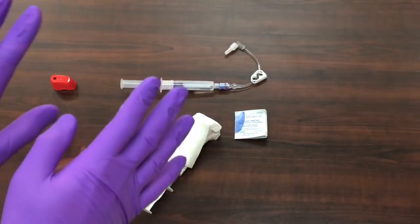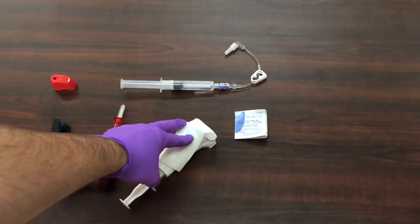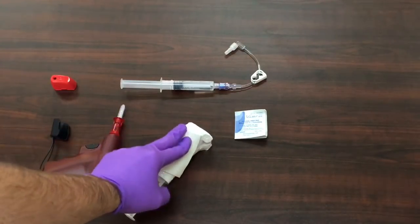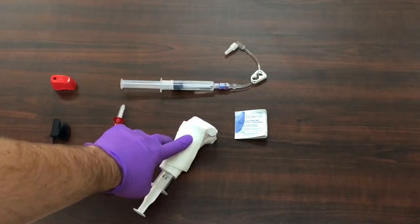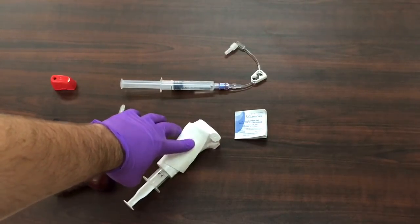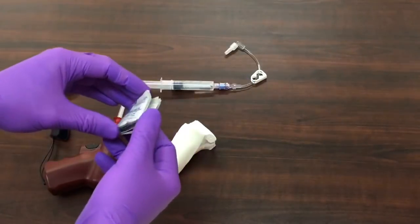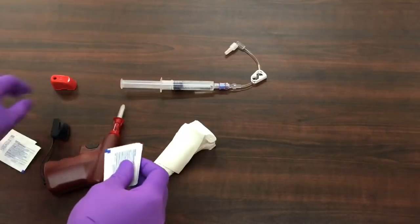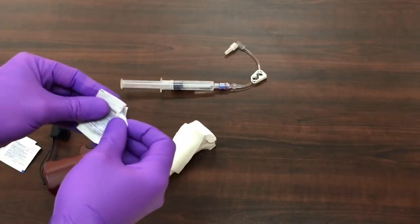Perform using appropriate PPE. To begin insertion you want to identify the tibial tuberosity of the model and palpate approximately two centimeters medial to that point along the plateau of the proximal tibia. The site should be prepped with an antiseptic of your choice. Here I'm just using alcohol but chlorhexidine or betadine are perfectly appropriate.